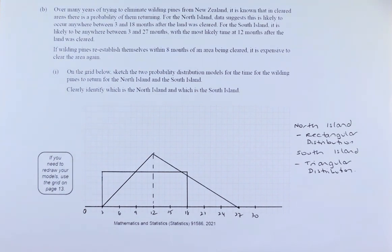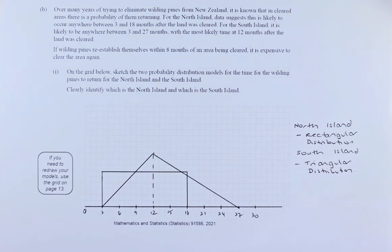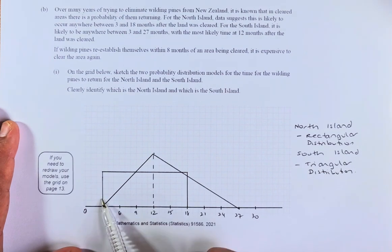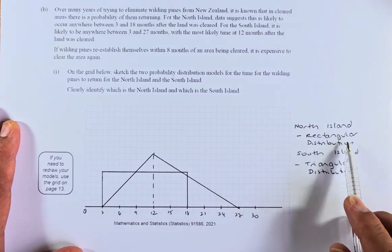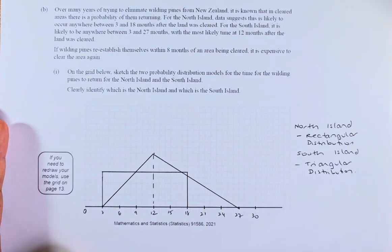Over many years of trying to eliminate wilding pine from New Zealand, it is known that in cleared areas there is a probability of them returning. For the North Island, data suggested this is likely to occur anywhere between 3 and 18 months after the land was cleared. So for the North Island, we are going to represent it by a rectangular distribution, starting from 3 months and ending at 18 months, and that is the first distribution you're going to learn.